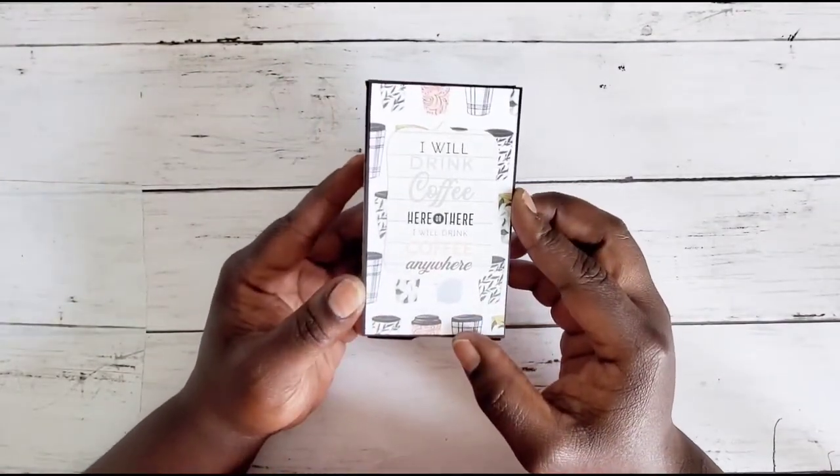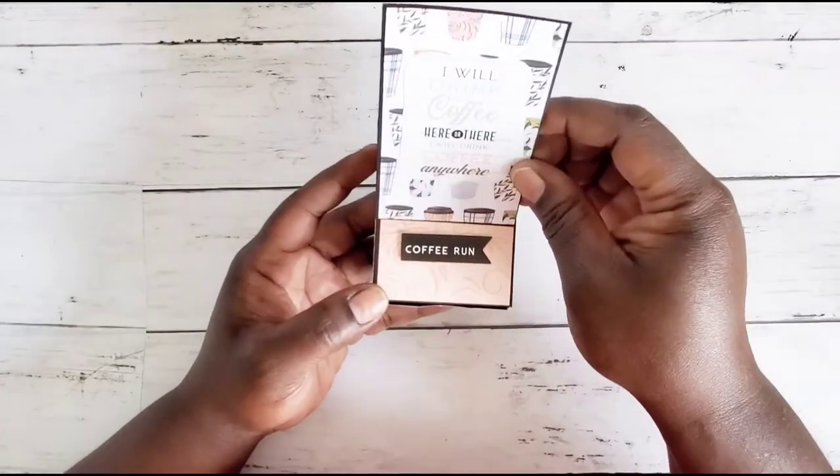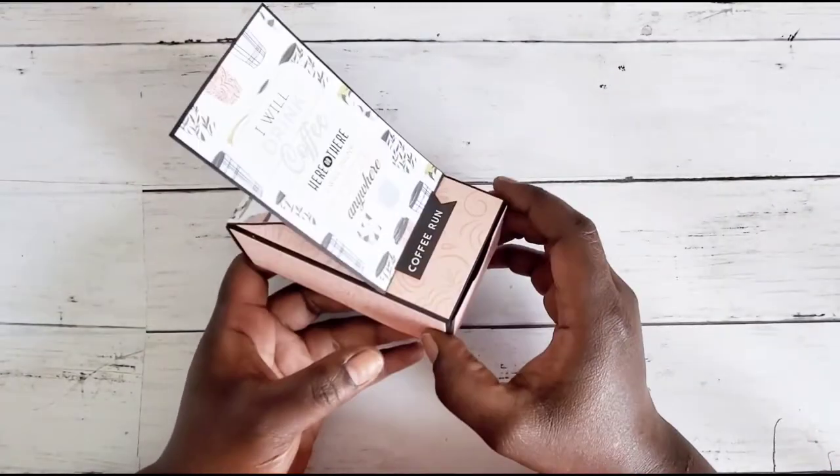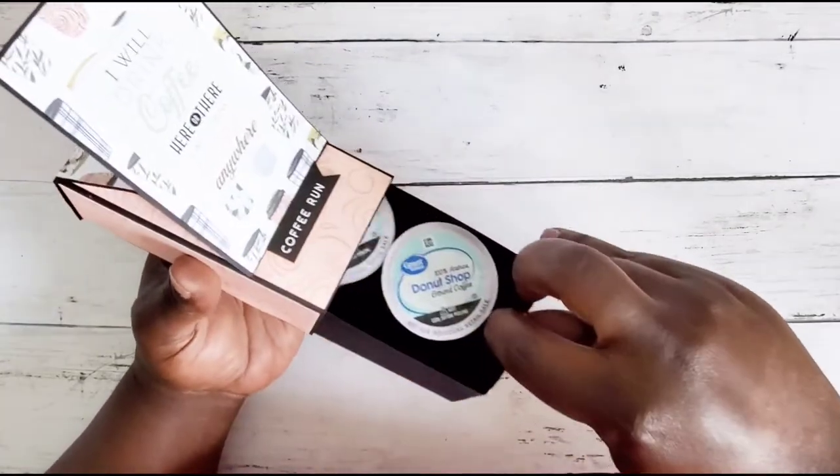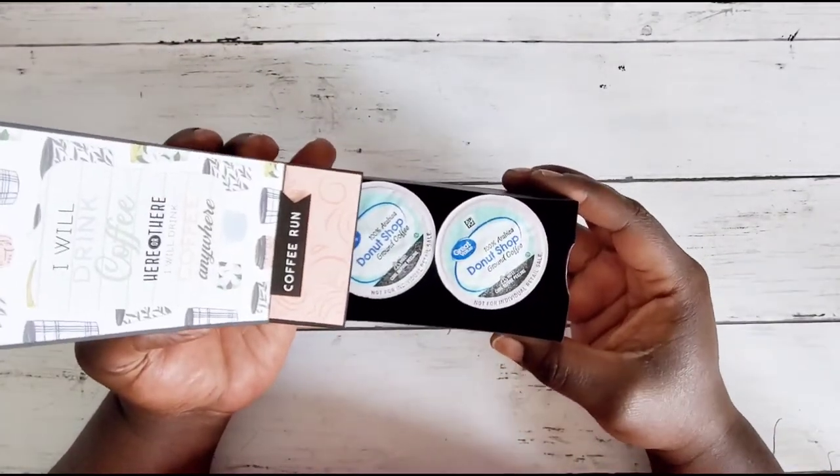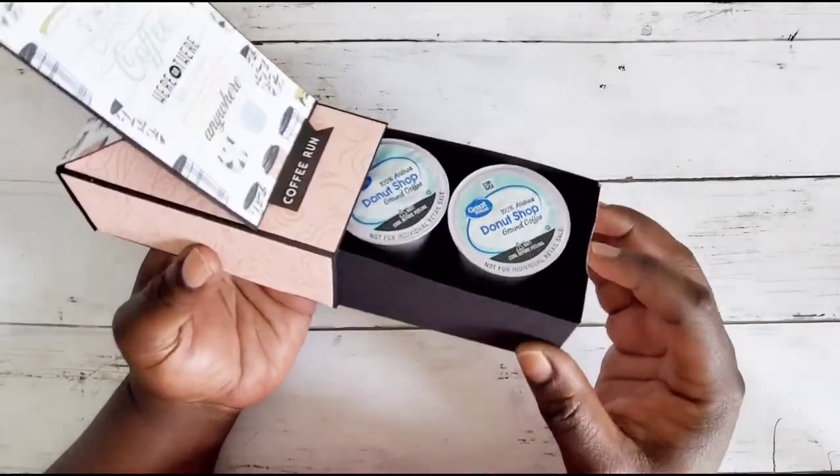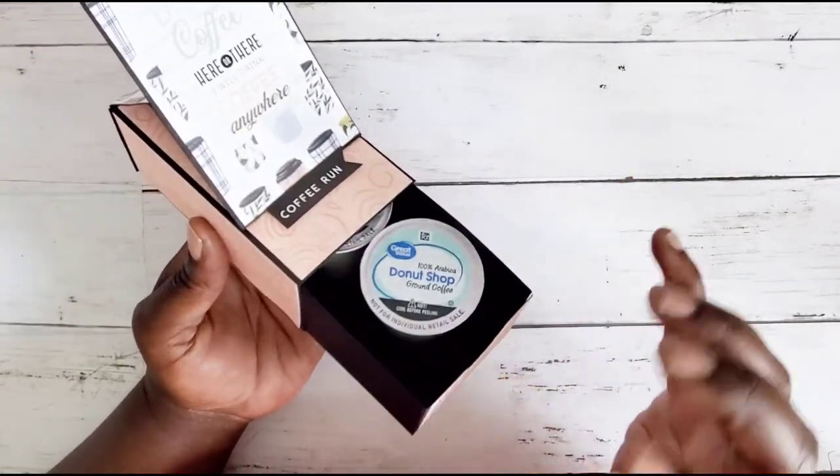You just lift it up and it's a cute little easel card there. Then we have a little drawer down below and you open it up and it fits two K-pods inside the box.